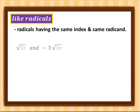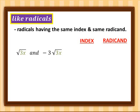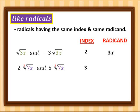So let's have the first example: square root of 3x and negative 3 square root of 3x. So let's identify what are the index and the radicand. For the first example, the index here is 2 since it's square root and the radicand is 3x. Second example: 2 cube root of 7x and 5 cube root of 7x. So the index for the second example is 3 and the radicand is 7x.